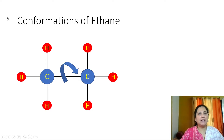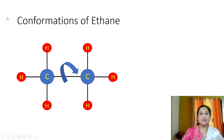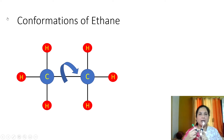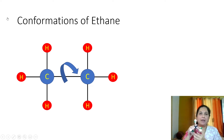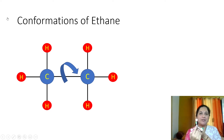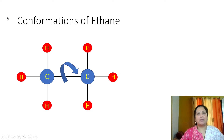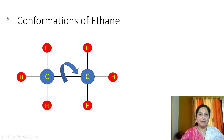The best projection to study confirmation is the Newman projection. In Newman projection, we hold the molecule so that this carbon-carbon bond is perpendicular to the plane of paper, and we watch the molecule from this side. For a detailed discussion about how to draw Newman projection, you can watch my video, Stereochemistry Basics: Newman Projection. The link is given in the description box.